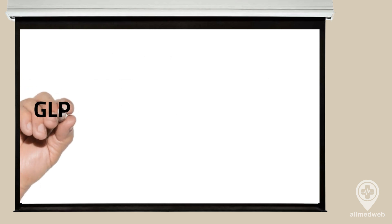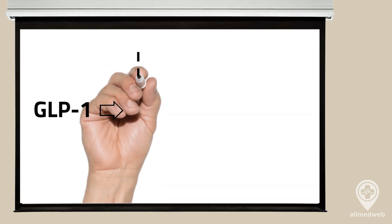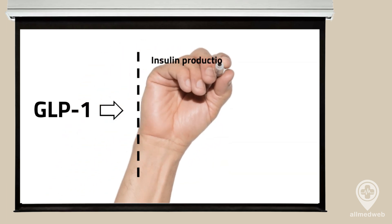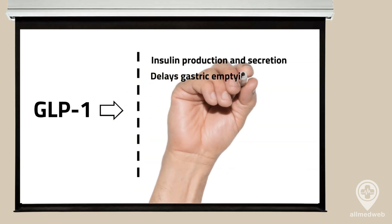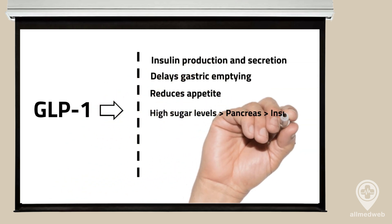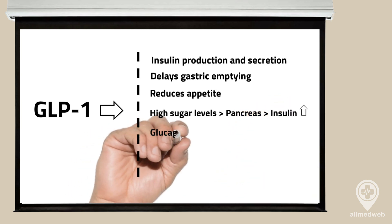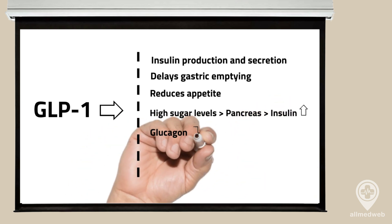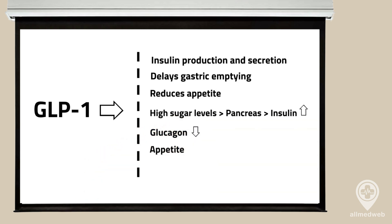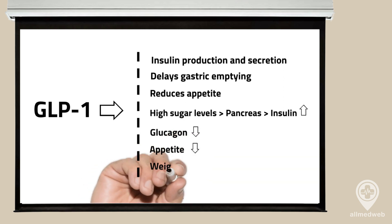Ozempic imitates the role of the hormone GLP-1. Among other functions, GLP-1 helps control insulin production and secretion, delays gastric emptying, and reduces appetite. Ozempic prompts the pancreas to produce more insulin when blood glucose levels are high, inhibits the release of glucagon — which raises blood glucose levels — and diminishes appetite and food intake, leading to weight loss.